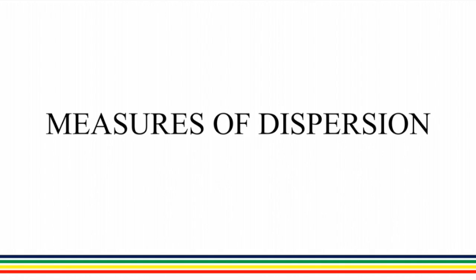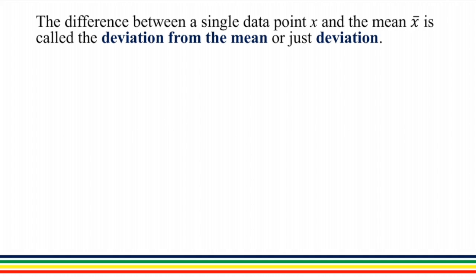Good day. We will be discussing the topic of measures of dispersion. The difference between a single data point x and the mean x-bar is called the deviation from the mean, or simply, deviation.